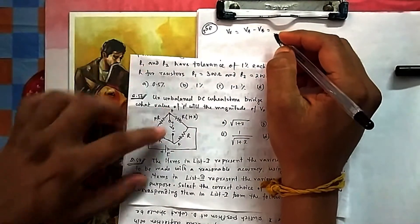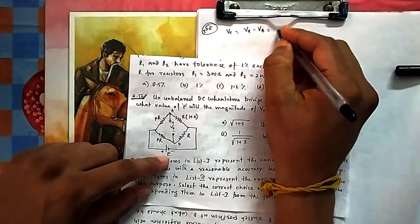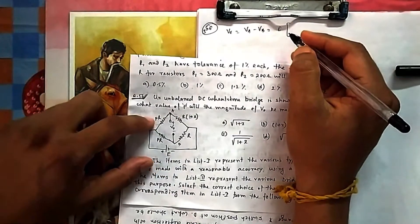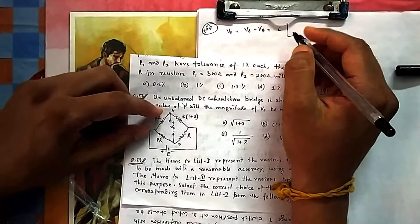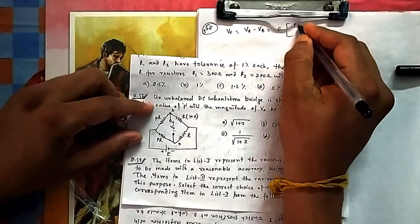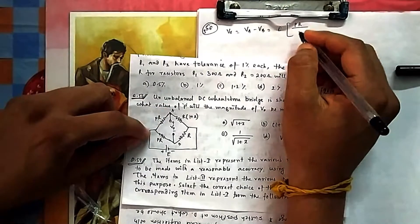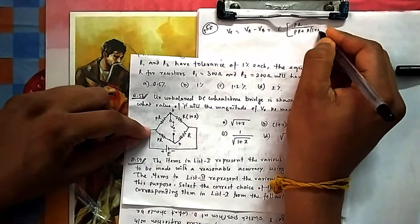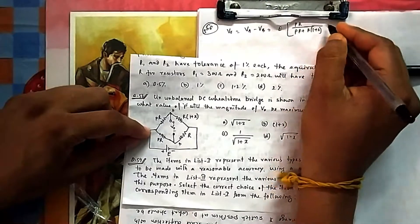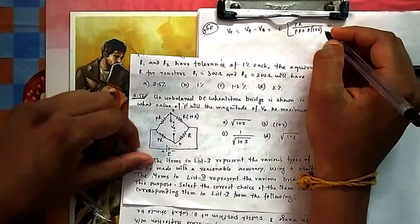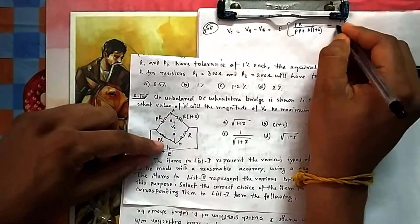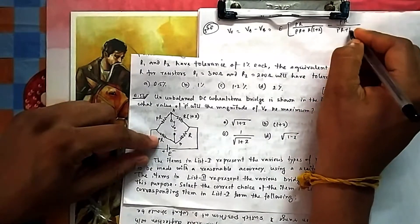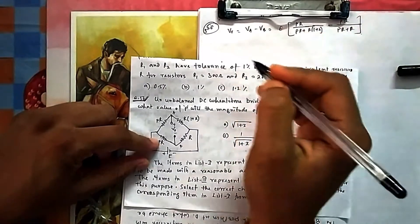Va is found by voltage division: E is divided into two segments, so Va equals E·pR divided by (pR + R)·(1 + x). Then minus the next term, which is also pR divided by (pR + R). This gives you the expression for V0.